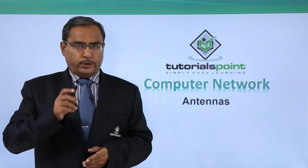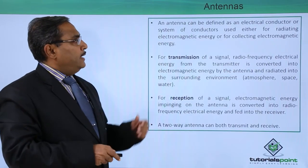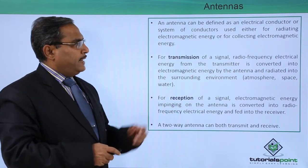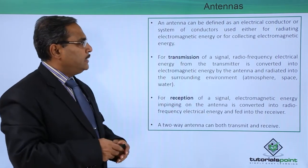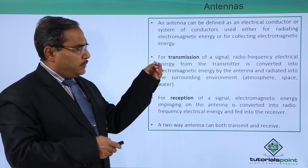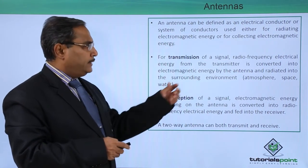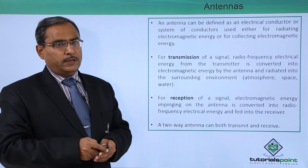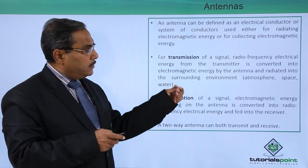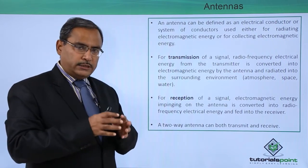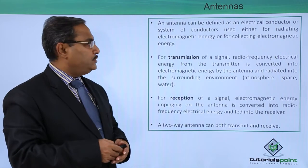In this video, we are going to discuss antennas. An antenna can be defined as an electrical conductor or collection of conductors used either for radiating electromagnetic energy or for collecting electromagnetic energy. An antenna can be considered as an electrical conductor or a system of conductors with the help of which we can both transmit and receive electromagnetic energy.